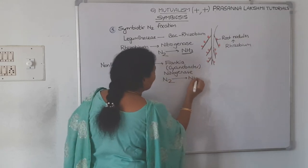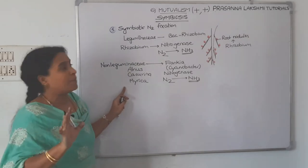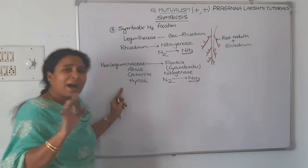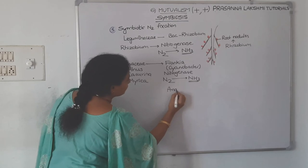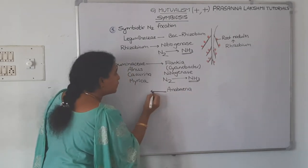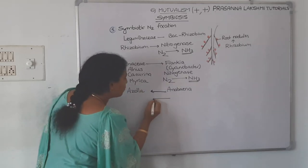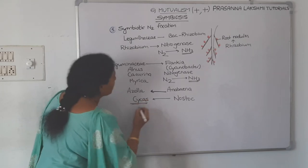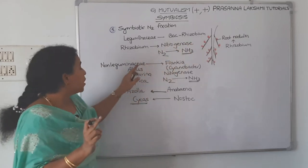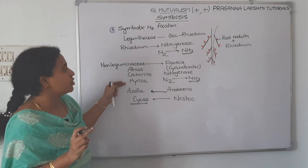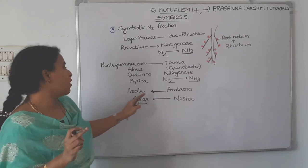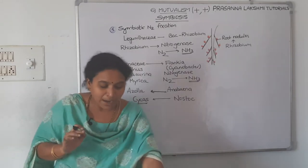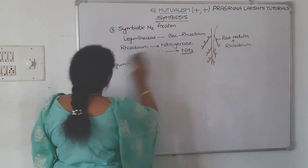In non-leguminaceae plants like Alnus, Casuarina, and Myrica, symbiotic nitrogen fixation is done by a cyanobacterium called Frankia, which also synthesizes nitrogenase enzyme. This topic appears in NEAT previous papers. Additionally, Anabaena fixes nitrogen in the plant Azolla, and Nostoc helps in symbiotic nitrogen fixation in the Cycas tree.